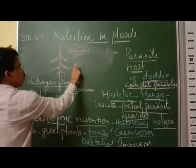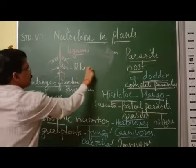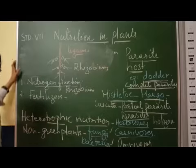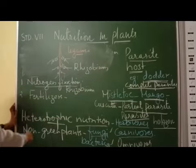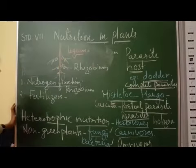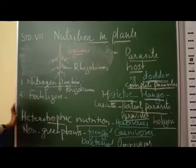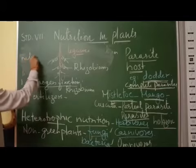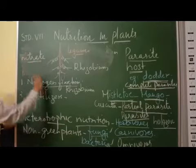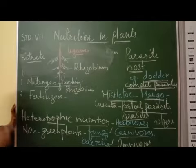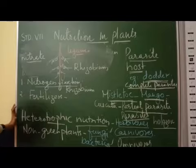These nodules contain rhizobium bacteria. Rhizobium bacteria absorb nitrogen from the atmosphere and convert nitrogen into nitrate compounds — water-soluble nitrogen compounds called nitrate. This nitrate is then absorbed by the plants. So that is the first method.